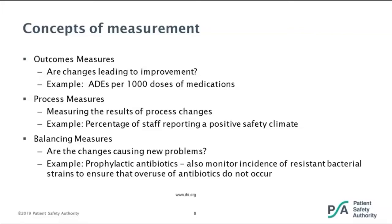Balancing measures are our opportunity to ask: we've made changes to improve a process — is that creating a new problem elsewhere? We might want patients to check their own medications, but will that lead to a decrease in patient satisfaction? Or if we're focusing on appropriate administration of prophylactic antibiotics, are we seeing an increase in resistant bacterial strains? The goal is to make sure you're not creating another problem by trying to solve one. You'll probably have more process measures than outcome measures, but it's important to look at both along with balancing measures.